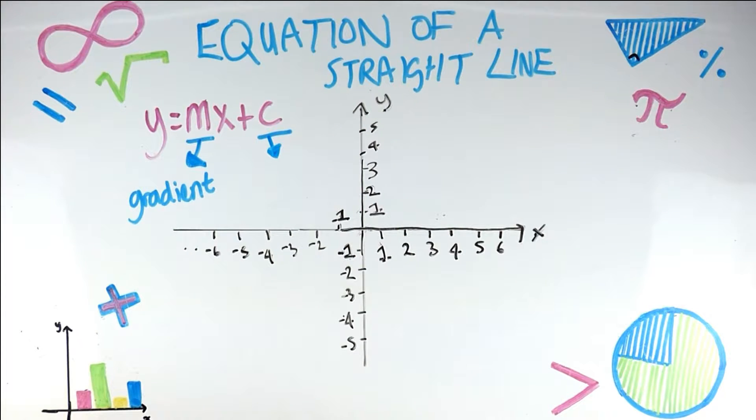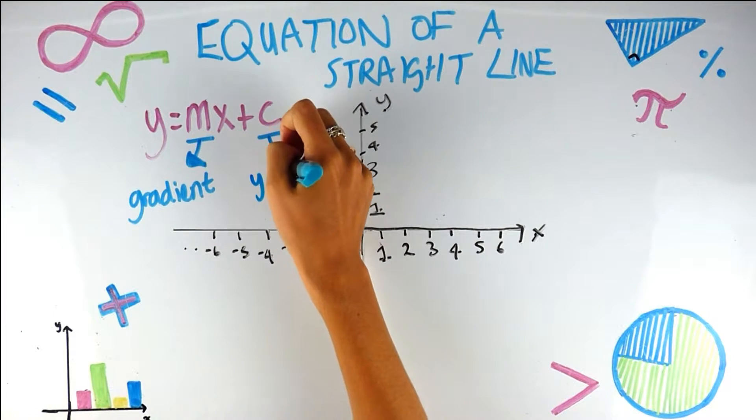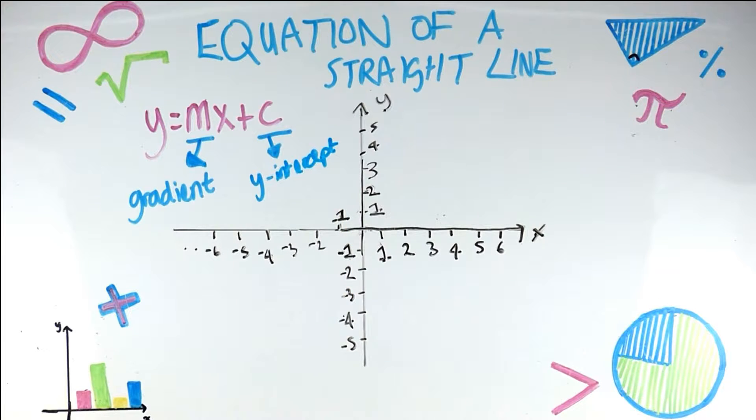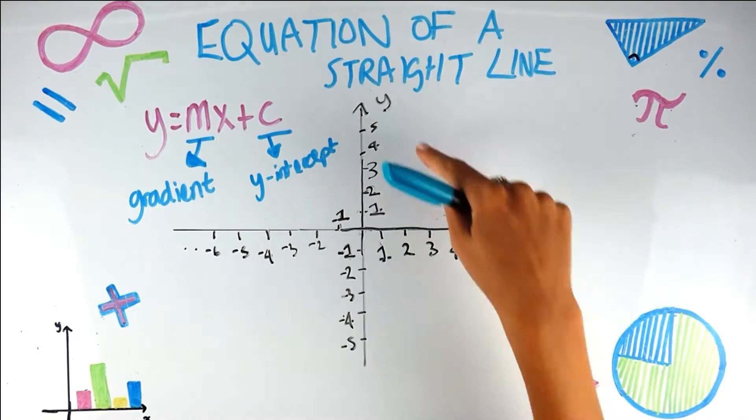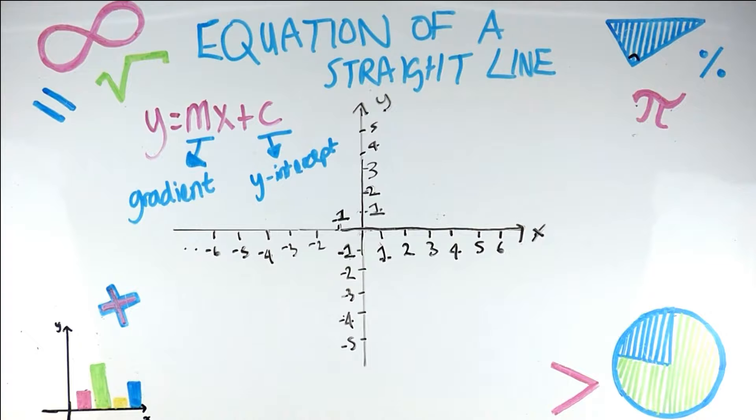And c is called the y intercept. Now, again, it doesn't kind of make too much sense, but intercept? It's kind of an s, kind of a c. So we know the equation of a straight line is y mx plus c and we know that m is the gradient, c is the y intercept and the y and x are the coordinates on the axis. So we now know all the detail about this.